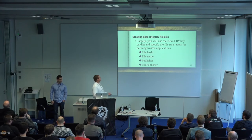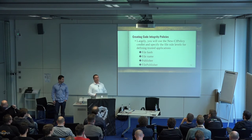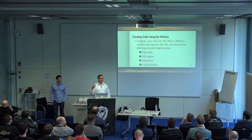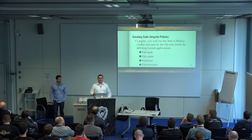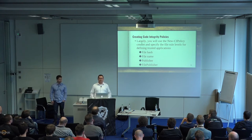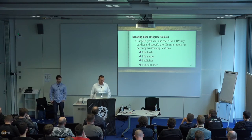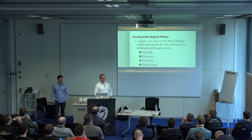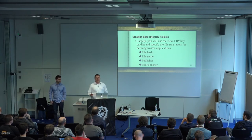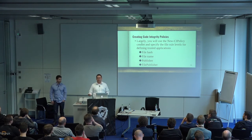There are a bunch of different levels. You can say you only want to trust applications based on the file hash from the system you're scanning — great if your binaries will never change, but if something is updated it won't run. You can also do it by file name, publisher, file publisher, PCA certificate, or leaf certificate — a couple of different ways to choose where you want to place your trust.